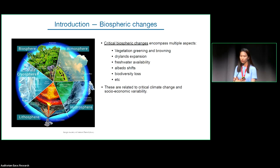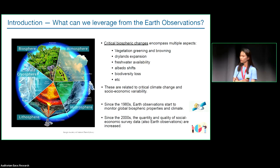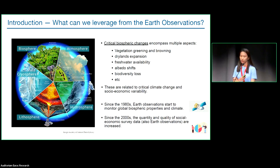These critical biospheric changes are not only one-way controlled — there are always back-and-forth interactions among three domains: atmosphere, biosphere, and socioeconomics. We now have the opportunity to monitor 20 years or more of critical biospheric and climate change. Since 2000, socioeconomic survey data has also increased dramatically. From a data perspective, we can more comprehensively understand the state of Earth's system, which is largely driven by human activities.